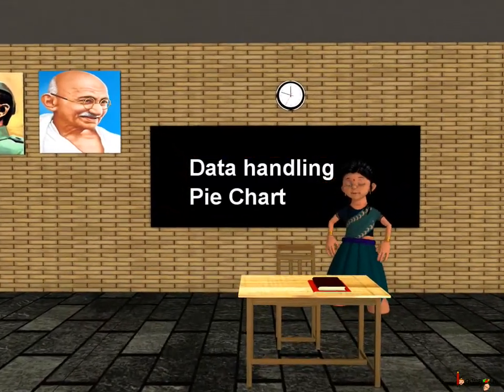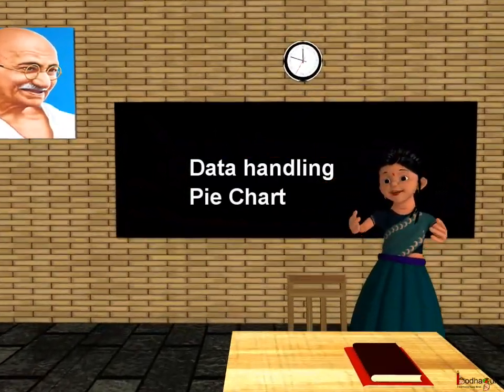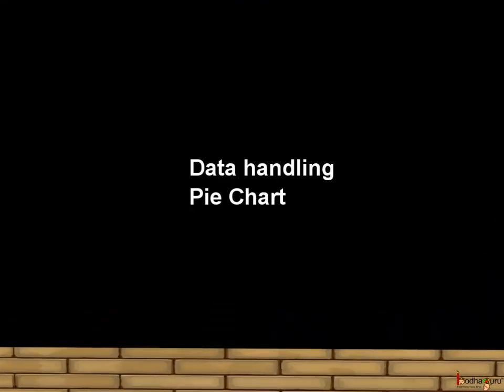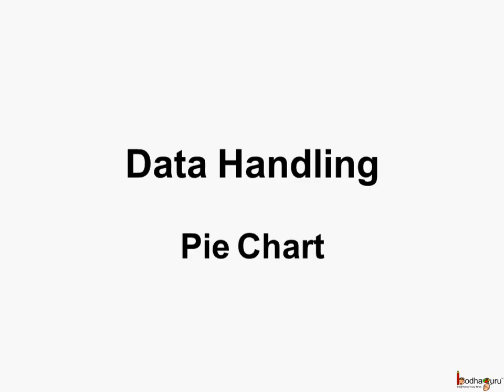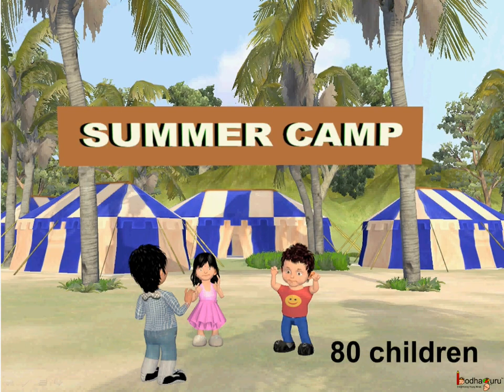Good morning children. Now you know what is data handling. Let us learn one more way of representing data which is by chart. A summer camp was held and 80 children attended that camp. All the children played their favorite games. Let us see what all favorite games were there.